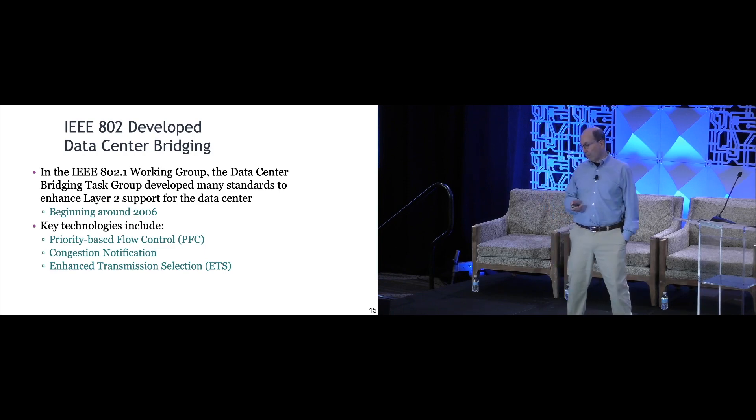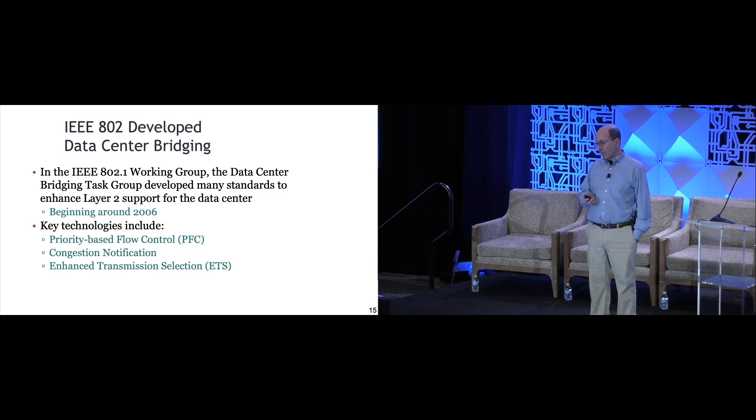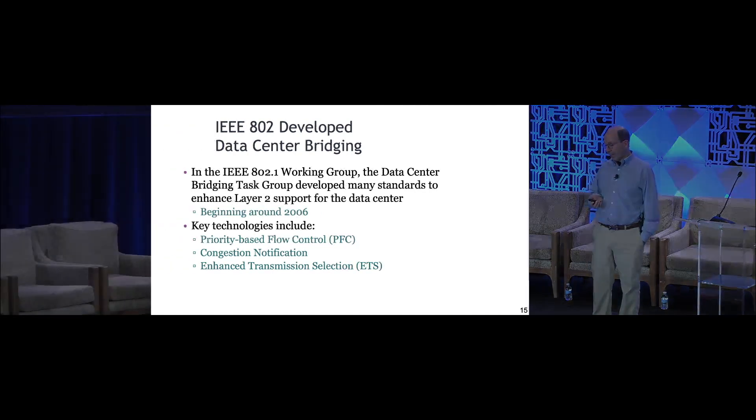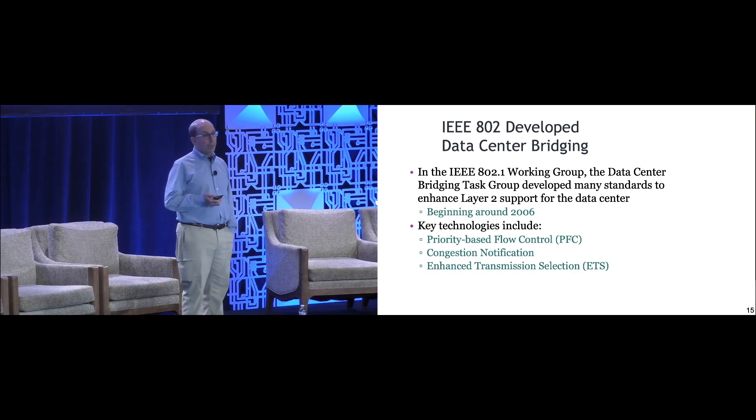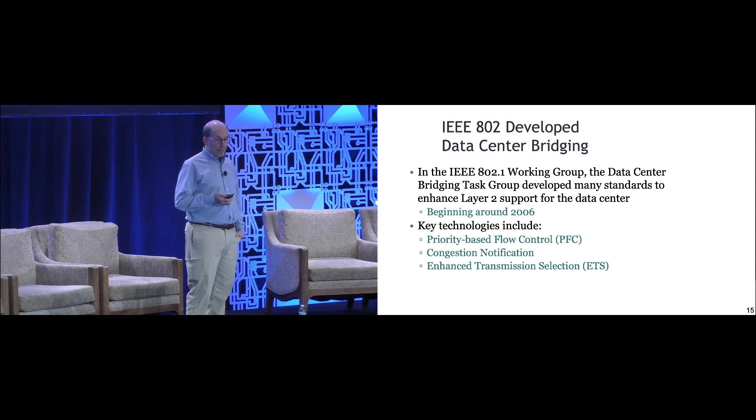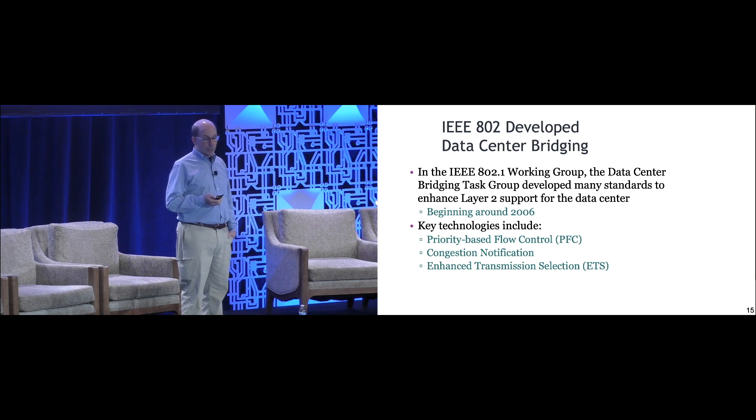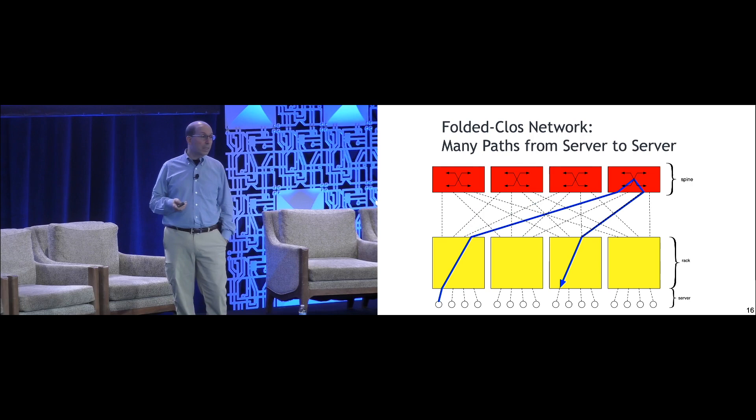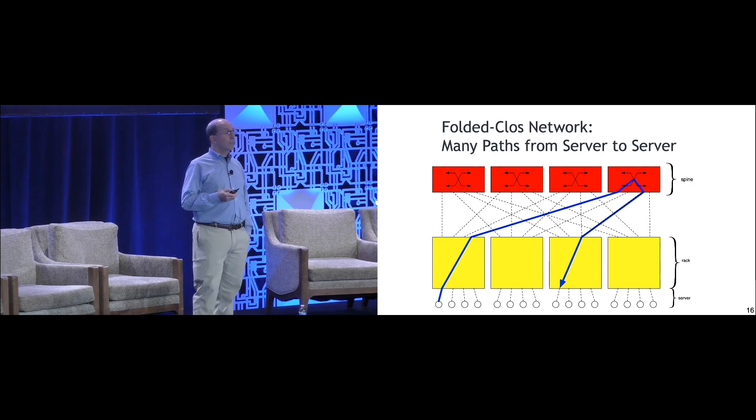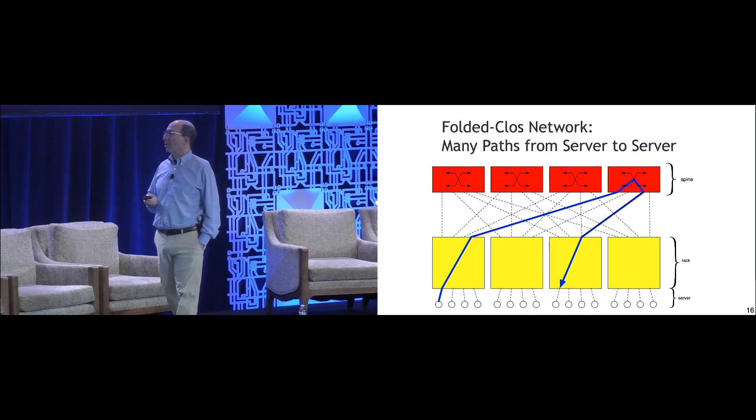Back in around 2006, IEEE 802 began a task group called the Data Center Bridging Task Group to develop improvements to the 802 technologies to be able to support these more advanced requirements on Ethernet. The key technologies that were developed and standardized at that time were PFC, or priority-based flow control, and congestion notification and enhanced transmission selection. I'll just quickly highlight these, but you're going to be getting more detail about these issues in the next couple of talks.